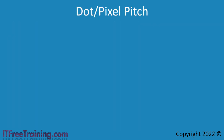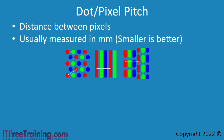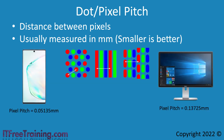Another measurement is dot pitch or pixel pitch — essentially the distance between each pixel, usually measured in millimeters. Remember that pixels are made up of three different colors, and there are many different ways this could be measured. As long as the same point in each pixel is chosen, it does not matter where it is measured from. The pixel pitch of the Note 10 Plus is much smaller than the Dell monitor — and remember, smaller is better when it comes to pixel pitch.